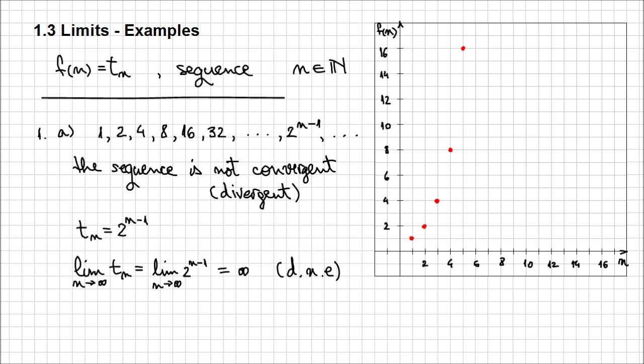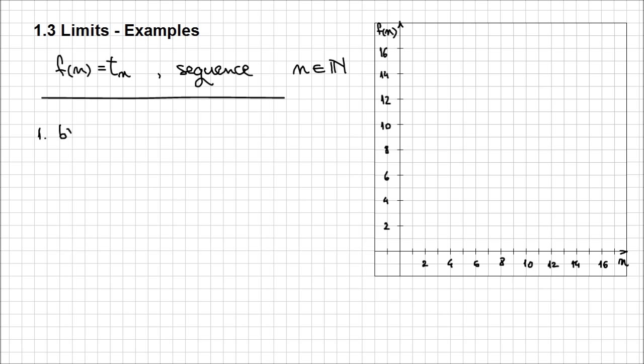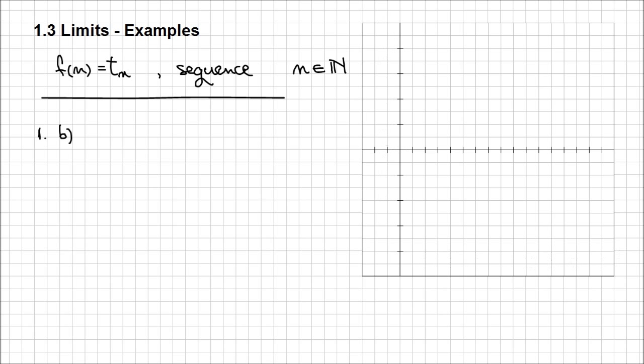Let's have a look at another example. So let's say at point b, I'm going to choose the following sequence: 2, 3 by 2, 4 by 3, 5 by 4, 6 by 5, and so forth. And again, I'm going to give you the general term is n plus 1 over n.